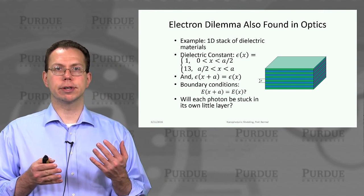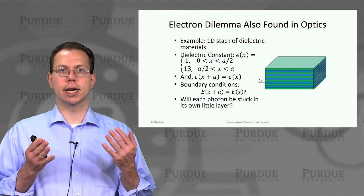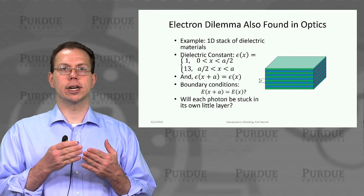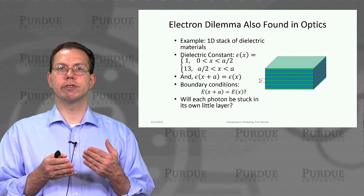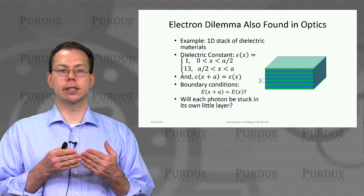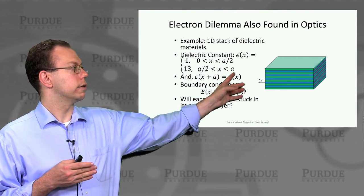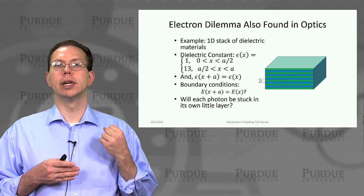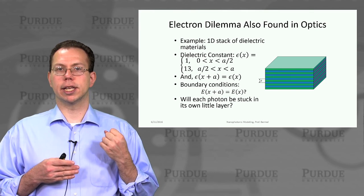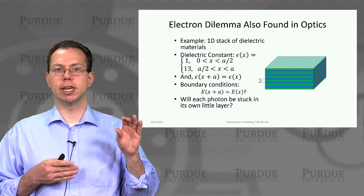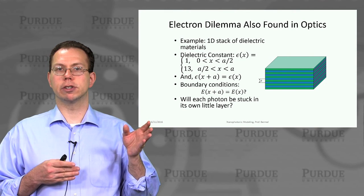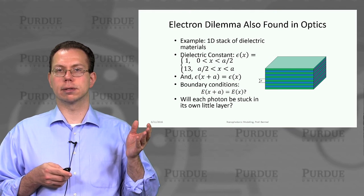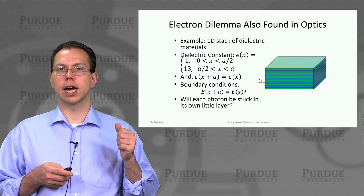Before we go into the solution, let me mention explicitly that the same kind of problem actually occurs in optics. Much like electrons getting stuck in wells, we could also have photons getting stuck in high dielectric materials. If we had a stack of high and low alternating dielectric materials — this is called a distributed Bragg reflector — it's periodic if you have many layers, and the question is what would be the boundary conditions and would each photon get stuck in a high index region, kind of like internal guiding of light.